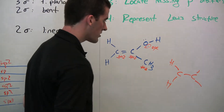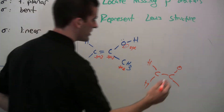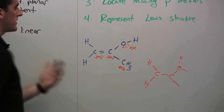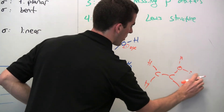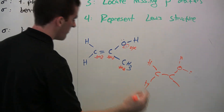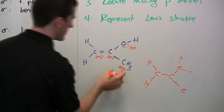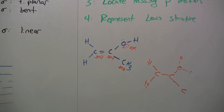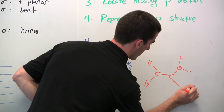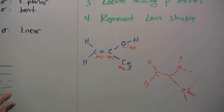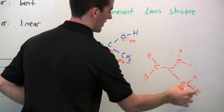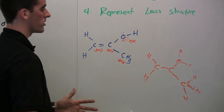Next, the oxygen is also SP2, so I draw its bonds 120 degrees apart. One bond goes to the hydrogen, one slot is taken by localized non-binding electrons, and the delocalized pair will go into the pi orbital in step 3. Lastly, the final carbon is SP3, so I draw it tetrahedral style — one bond down, one wedged coming out of the board, one dashed going into the board — with bond angles of about 109.5 degrees, each bonded to a hydrogen.